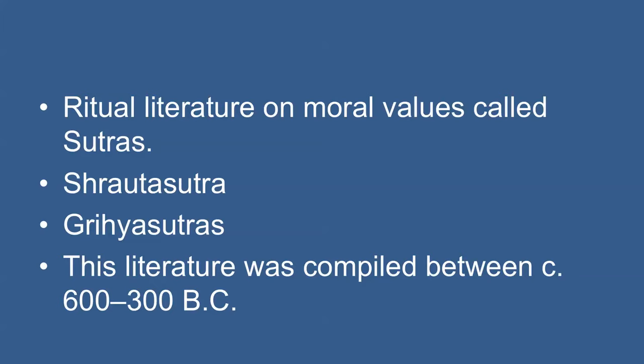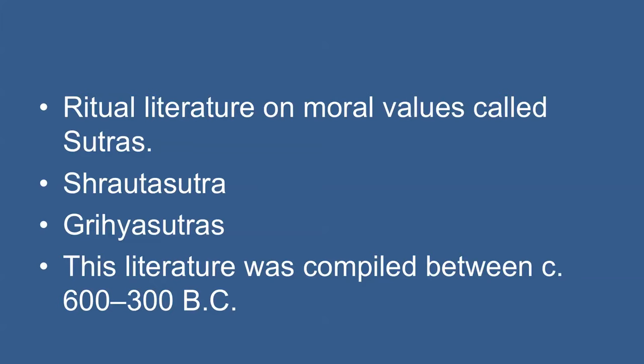In the post-Vedic period, we have a large number of ritual literature on moral values called Sutra. Grand public sacrifices to be performed by rulers are recorded in Shrauta Sutra, while domestic rituals connected with birth, naming, sacred thread ceremony, marriage, funerals, etc. are prescribed in Grihya Sutra. This literature was compiled between 600 and 300 BC.